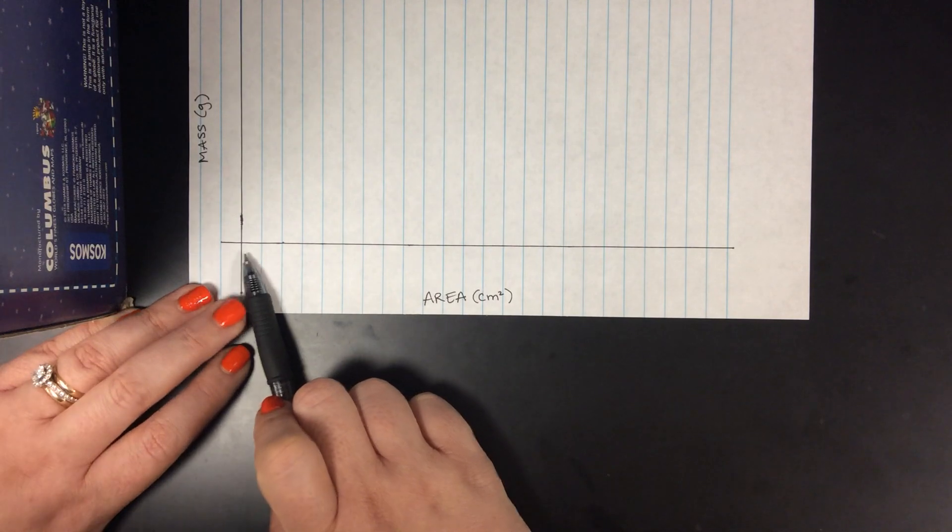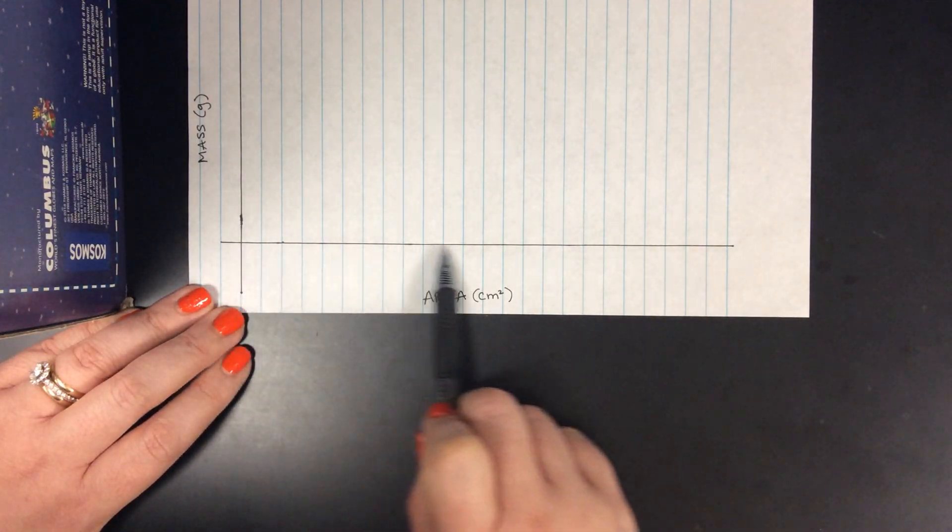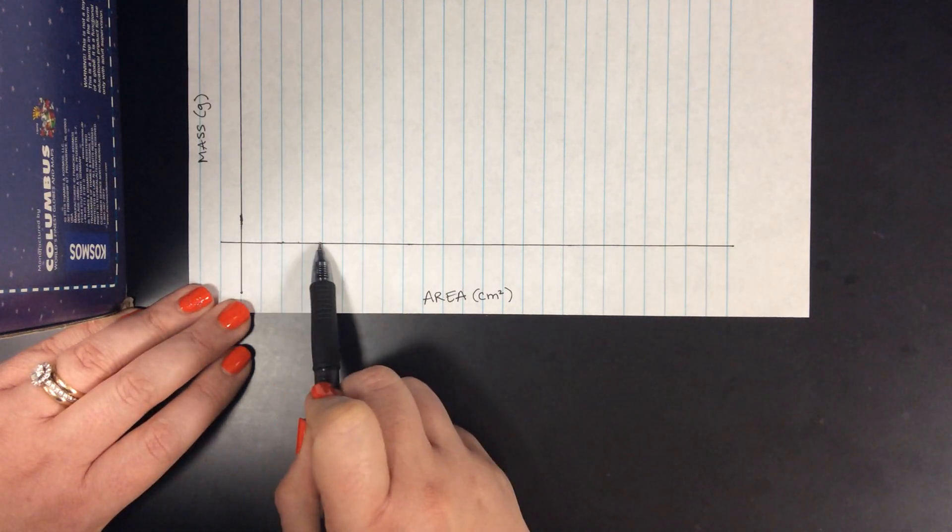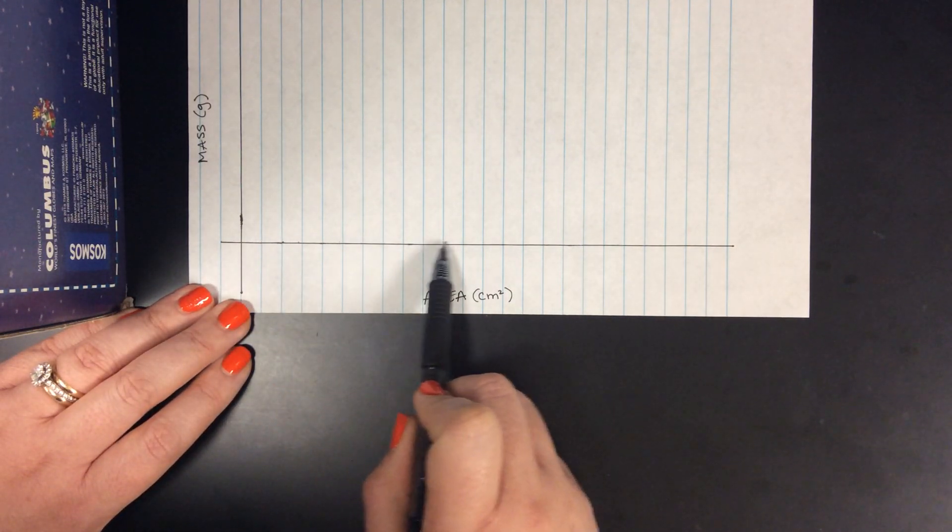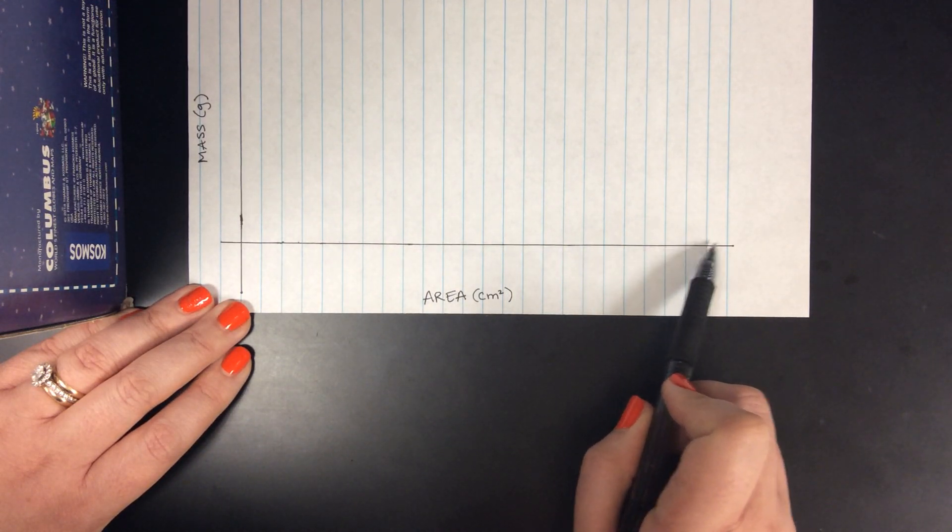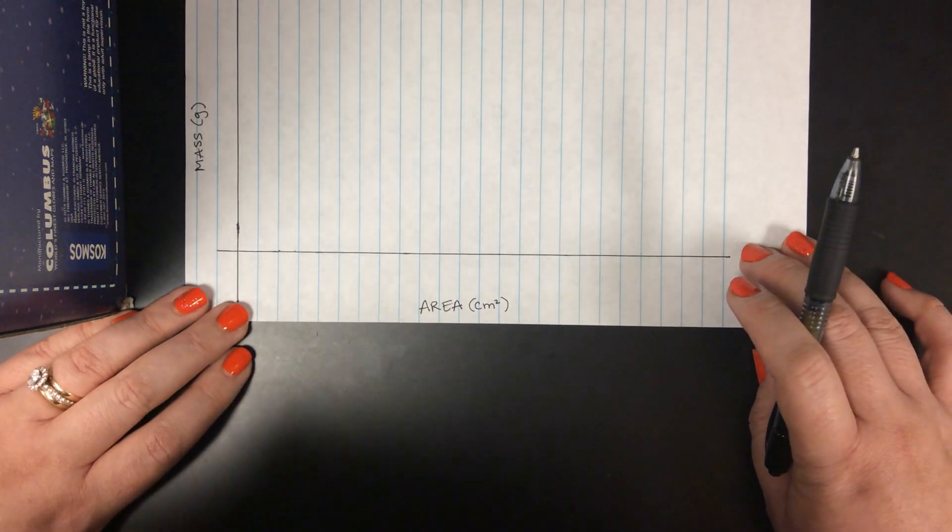Now you're going to come along your x-axis and you're going to count how many lines you have to work with. [counts 1 through 24] I have 24 lines available right here.